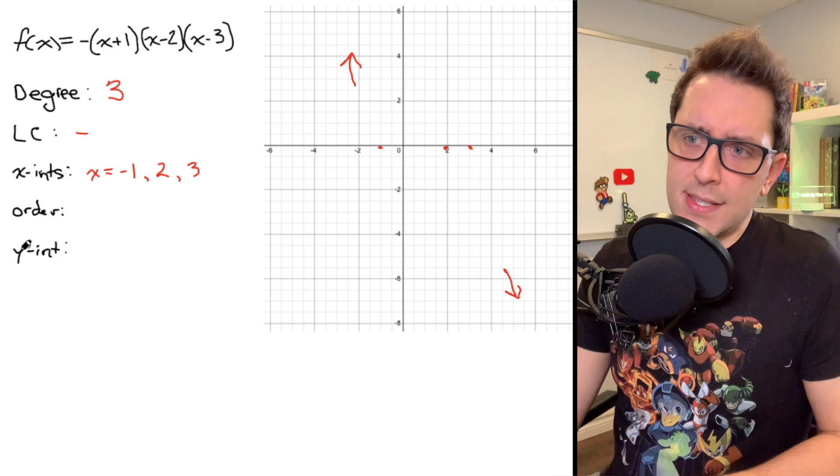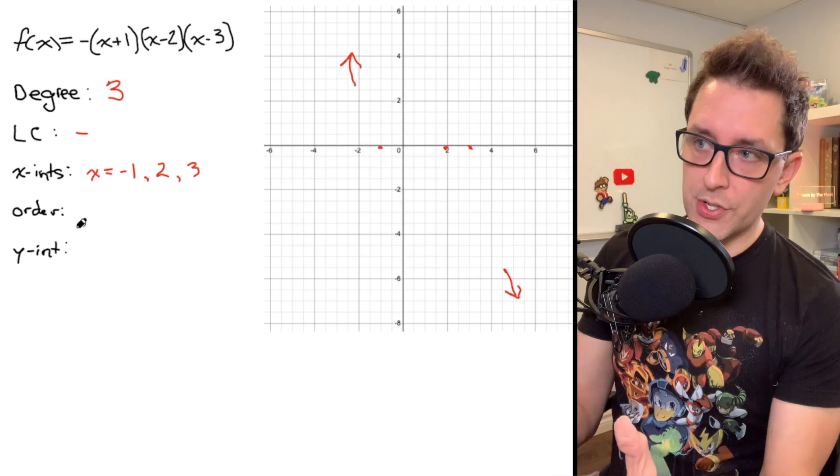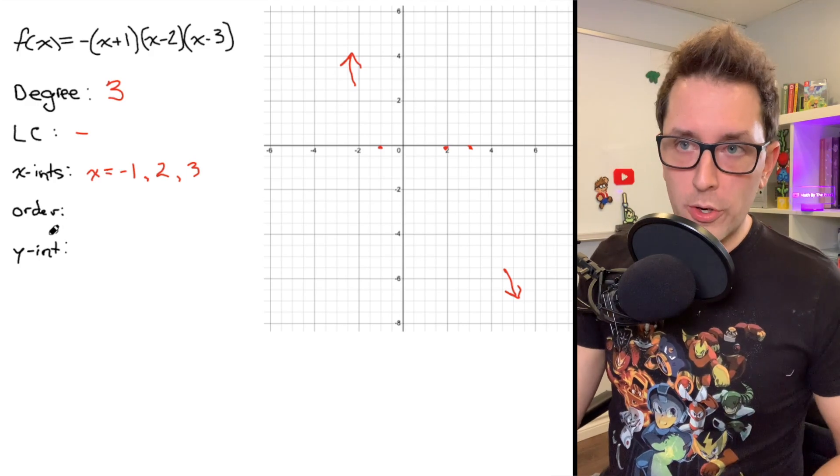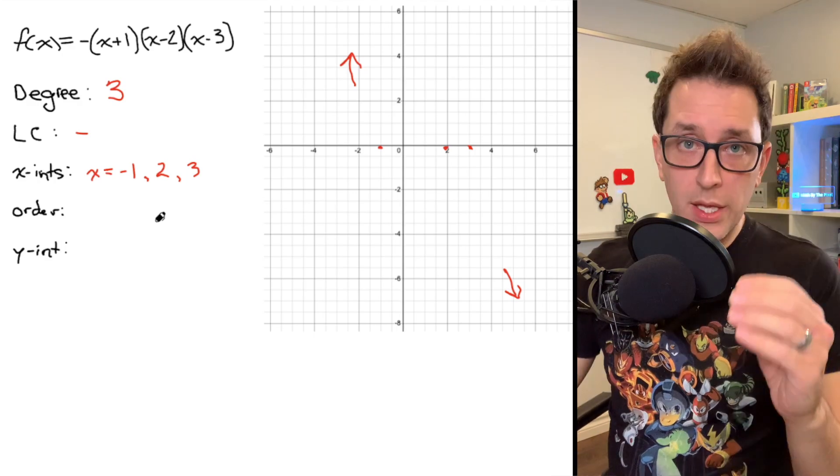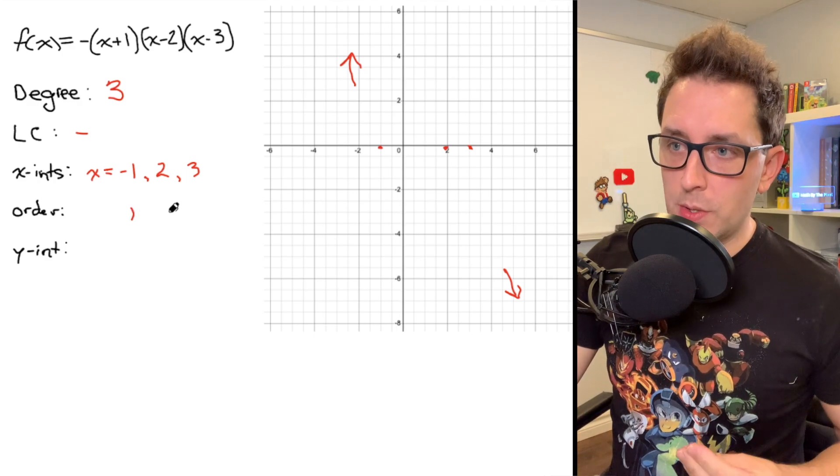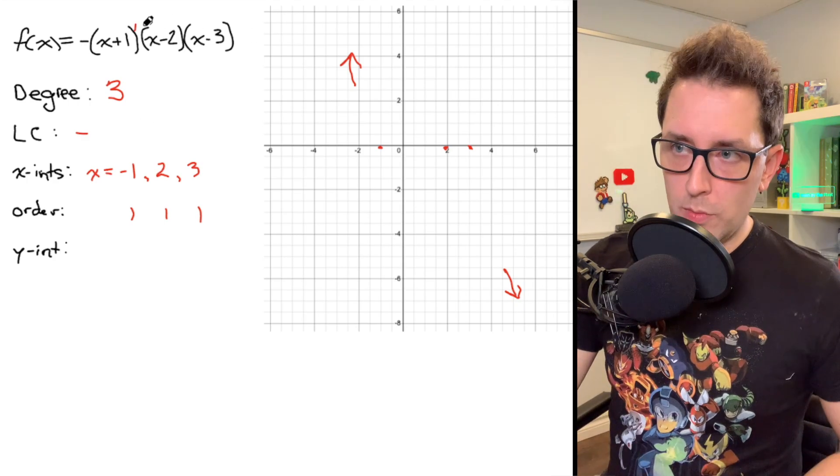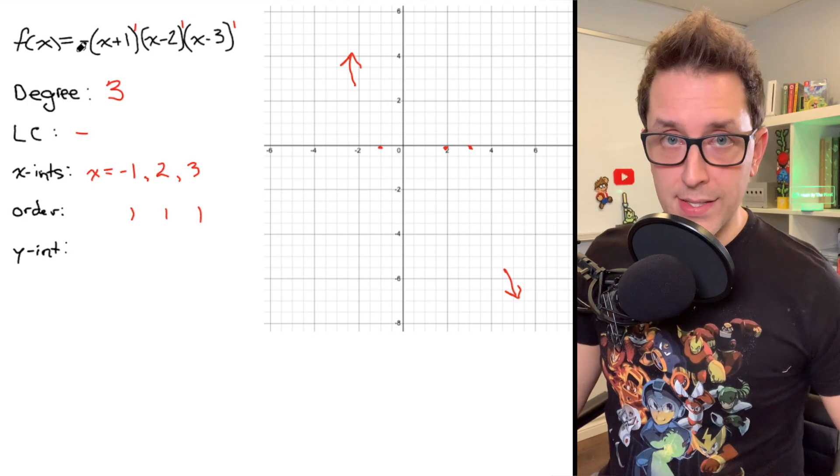Now let's talk about this order business, because this is something that I think a lot of people overlook, but it's actually really helpful when it comes to really understanding what the sketch of your polynomial is going to look like. So we can use the word order to describe the behavior of the function at the x-intercept. Each of these x-intercepts is going to have an order of 1. And the reason for that is if you look back at our original function, we have sort of an imaginary 1 as a power on each of our sets of brackets.